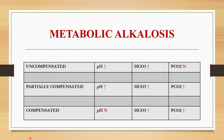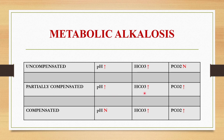Now we can see about uncompensated, partially compensated, and fully compensated metabolic alkalosis. In metabolic alkalosis, pH will be high and bicarbonate will also be high. In case of uncompensated metabolic alkalosis, pH will be high, bicarbonate will be high, and PCO2 will be normal. If it is partially compensated metabolic alkalosis, pH will be high, bicarbonate will be high, and PCO2 will also be high. And if it is fully compensated metabolic alkalosis, pH will be normal, bicarbonate will be high, and PCO2 will also be high.